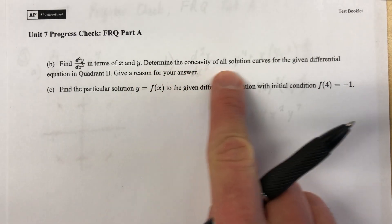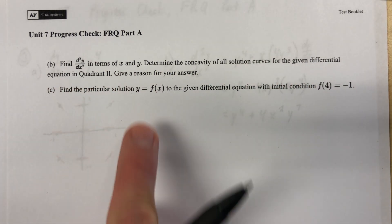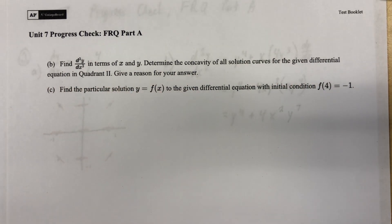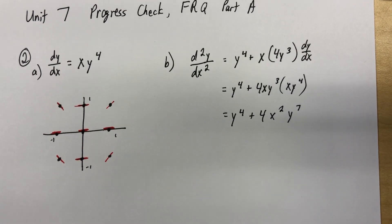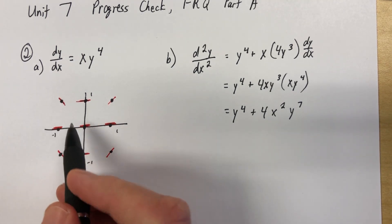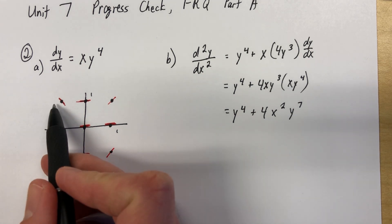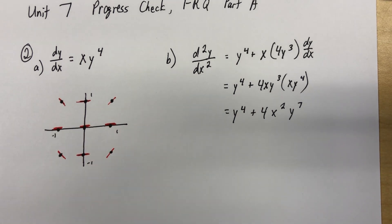But now let's read a little further into the actual question. So, determine the concavity of all solution curves for the given differential equation in quadrant 2. Give a reason for your answer. Well, concavity, so concave up or concave down, depending on the sign of the second derivative. So let's think about what happens in quadrant 2. This is quadrant 2. Quadrant 2, we have negative x values and positive y values.